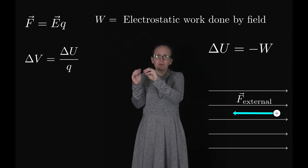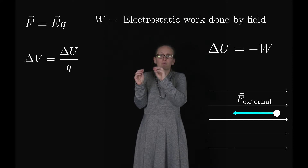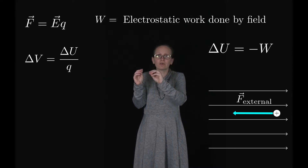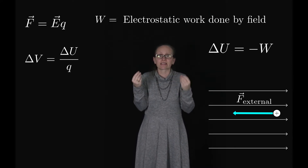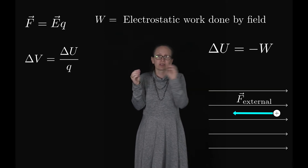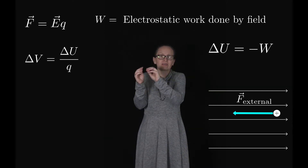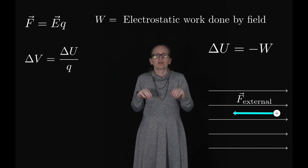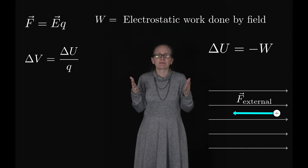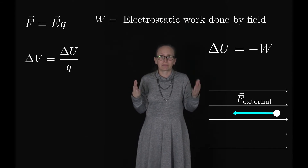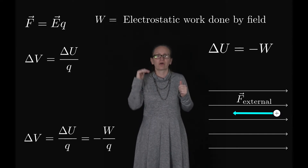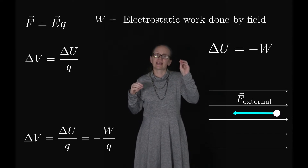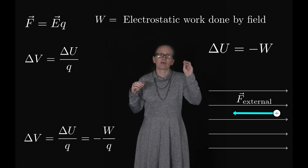As we move that charged particle with that force, we're giving it energy in the form of potential energy, as long as we leave it with the same speed it started with. So we can write the equation for potential difference as ΔV = ΔU / q = −W / q.